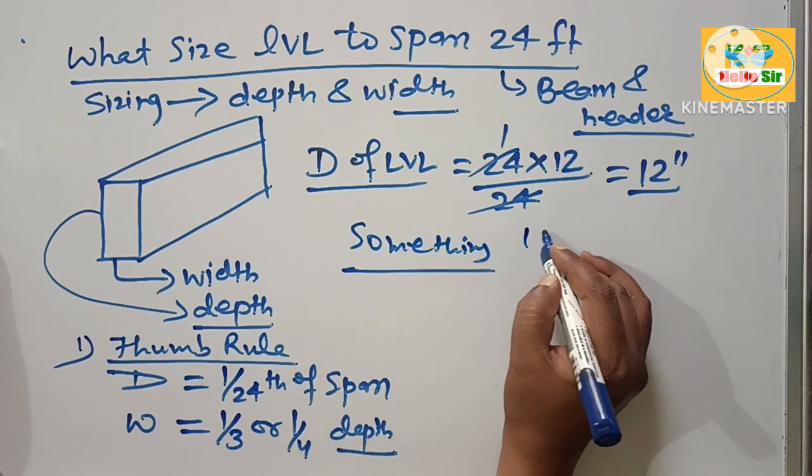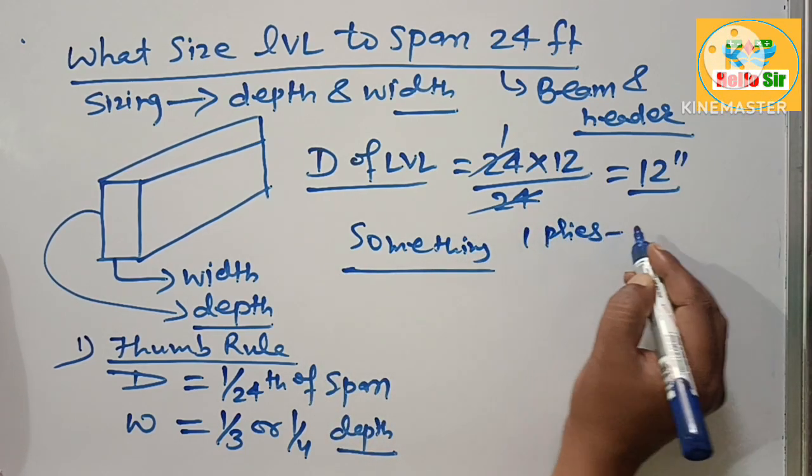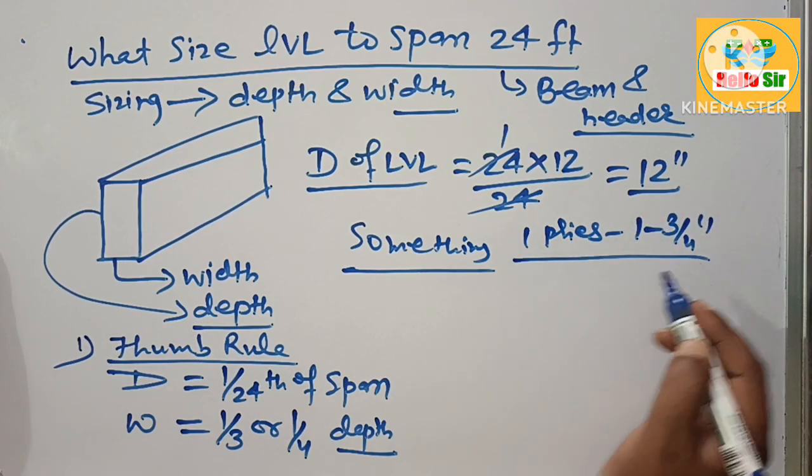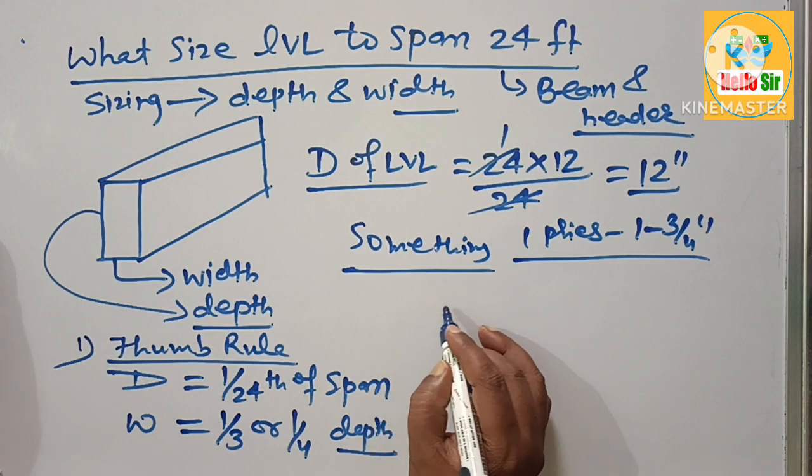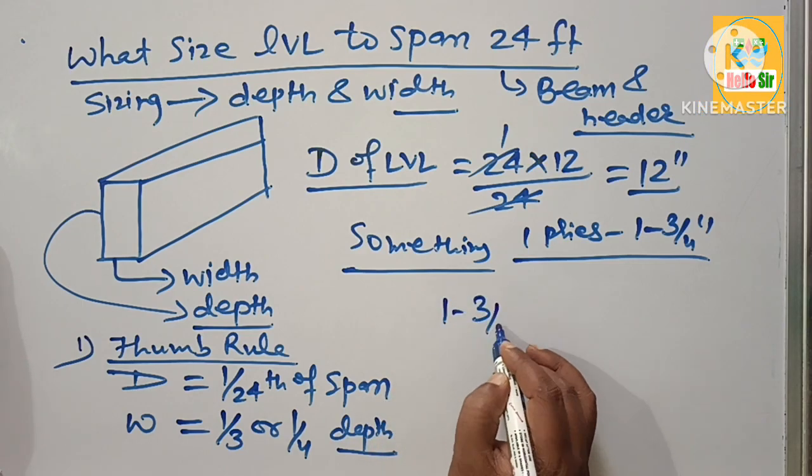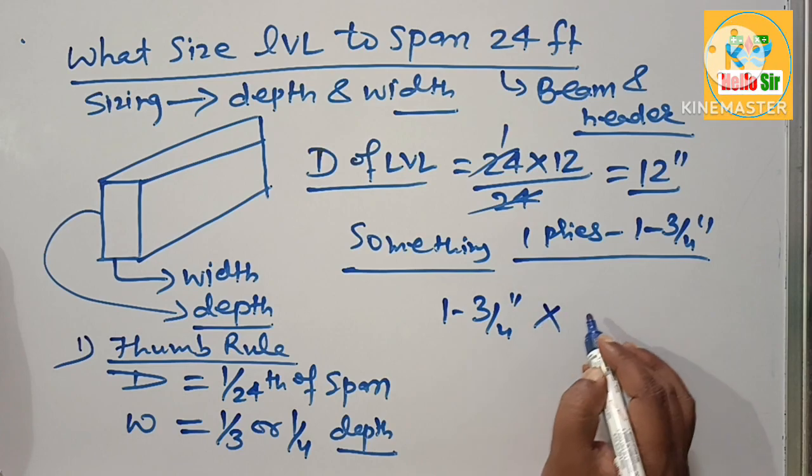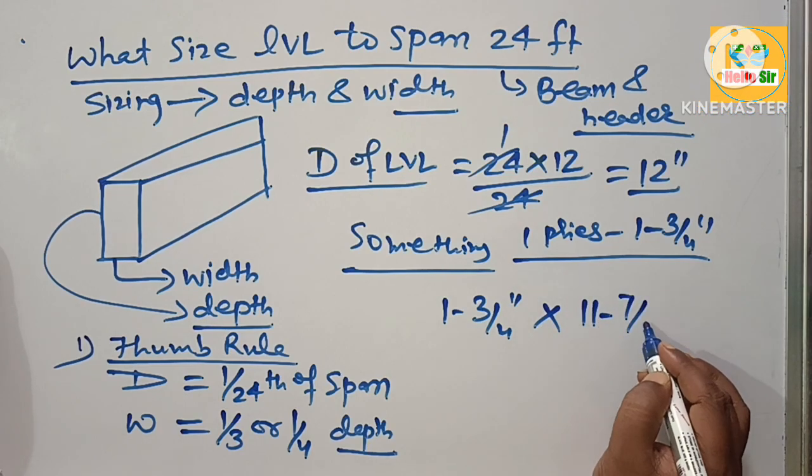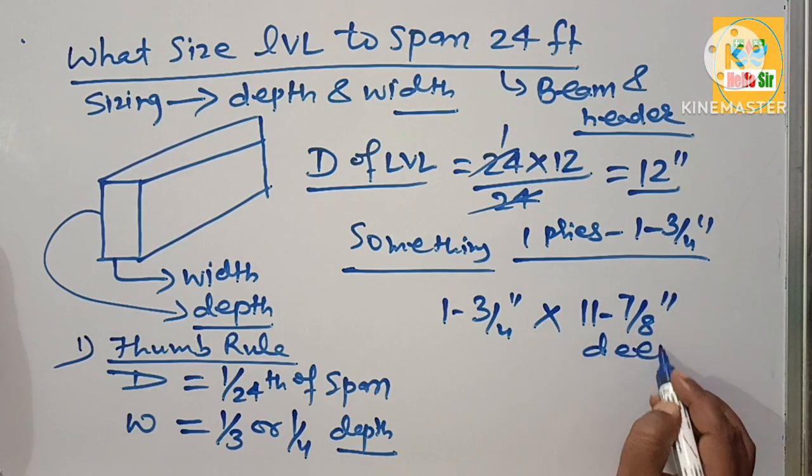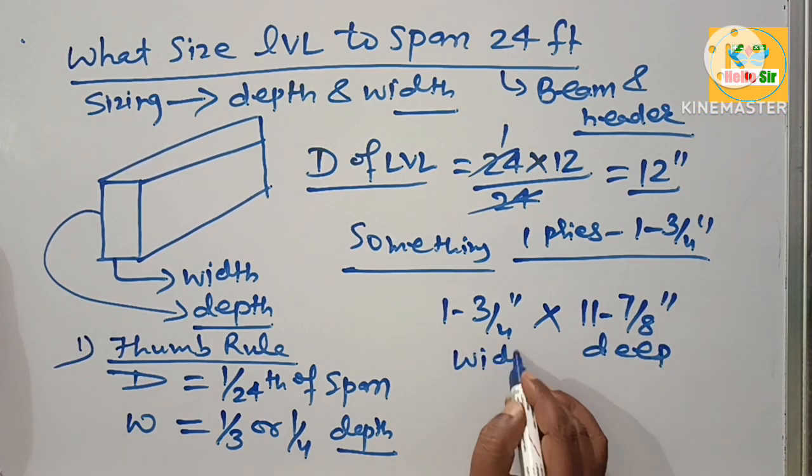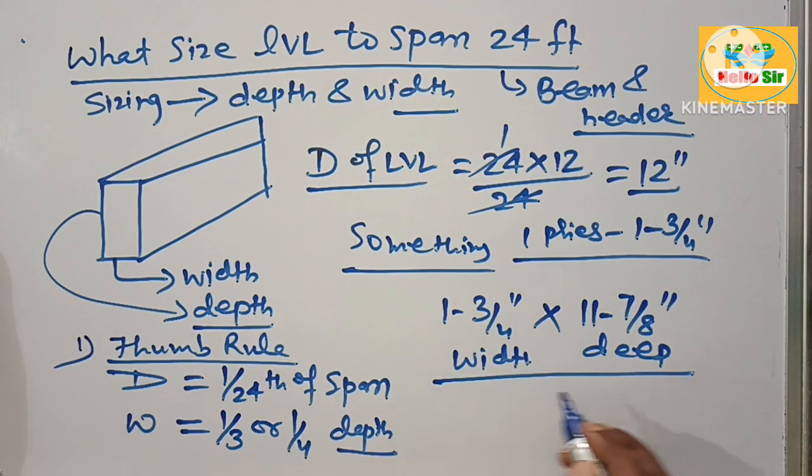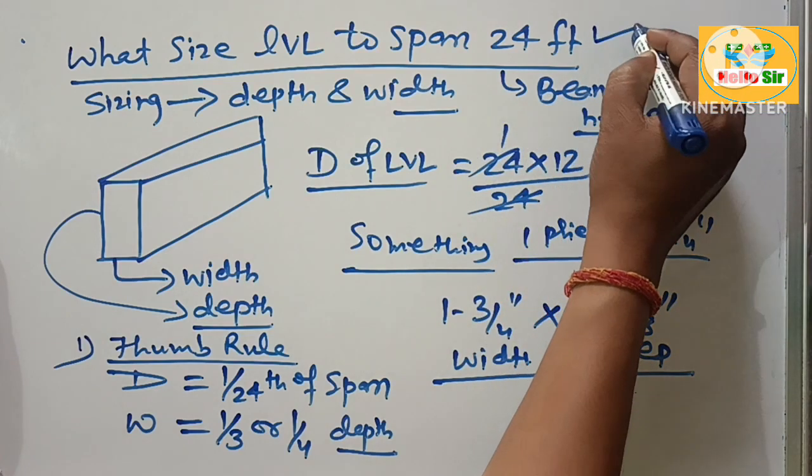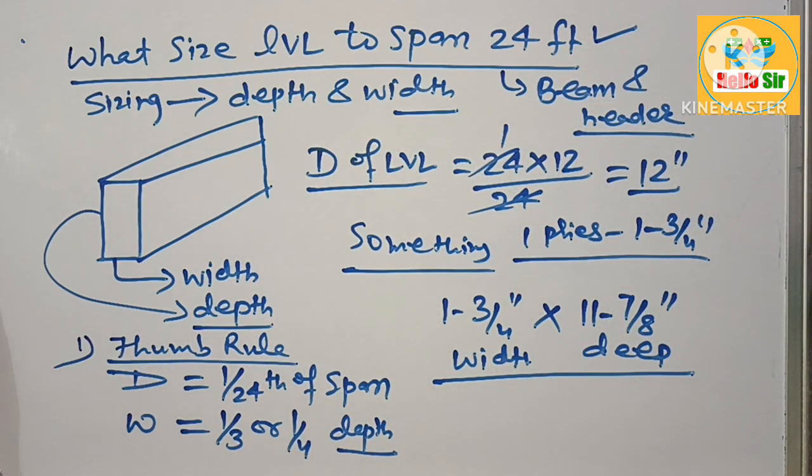One ply, single ply, with 1 and 3/4 inches width and 11 and 7/8 inches deep. This one is deep and this one is width. This is the correct LVL beam size needed to span 24 feet. Thank you.